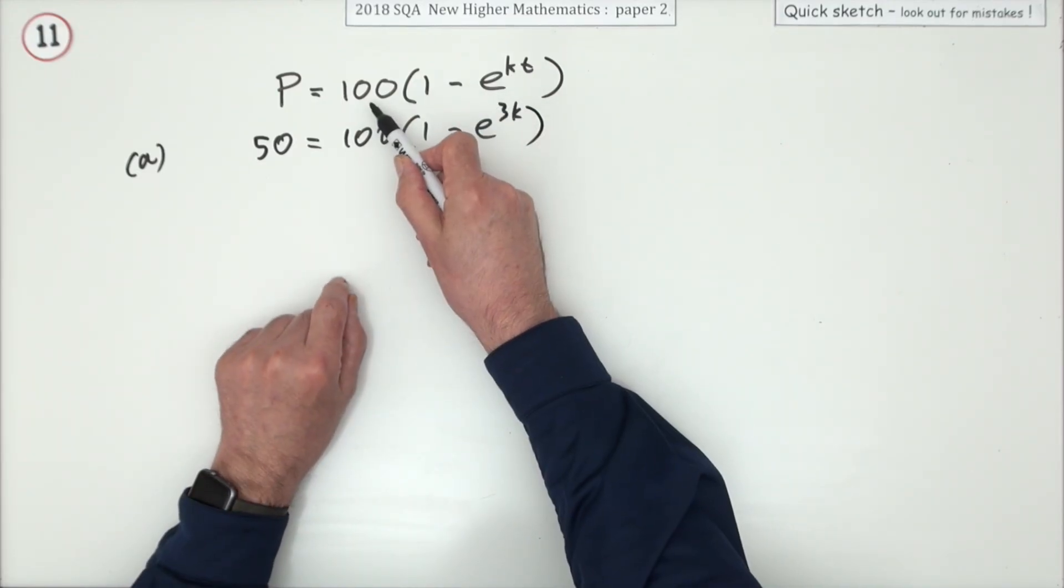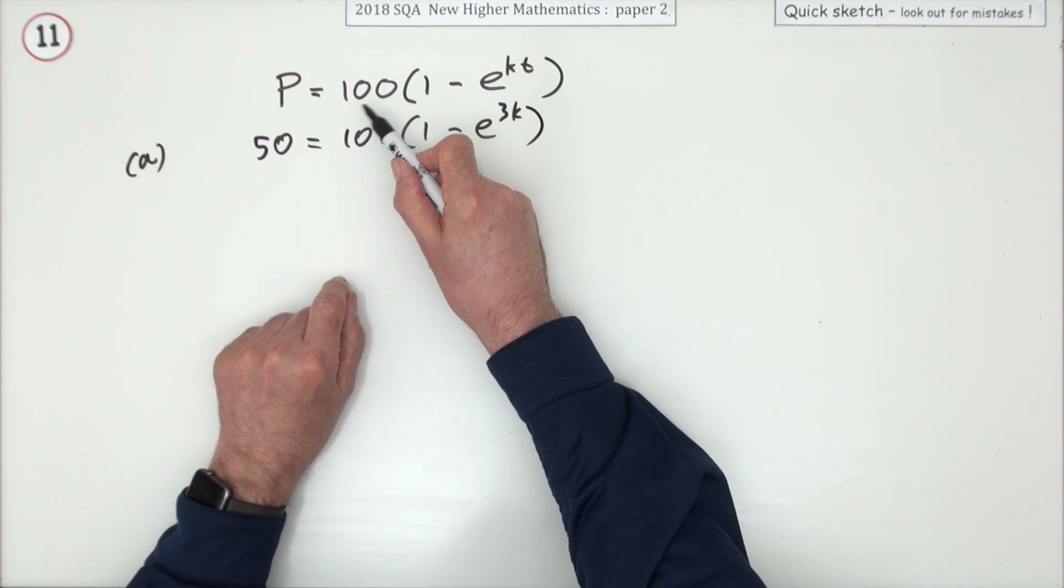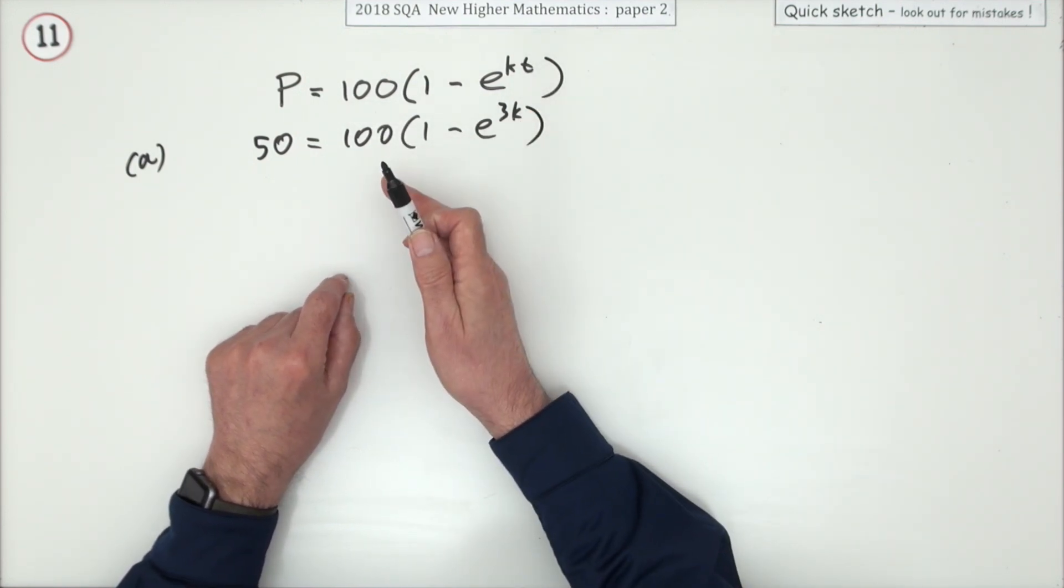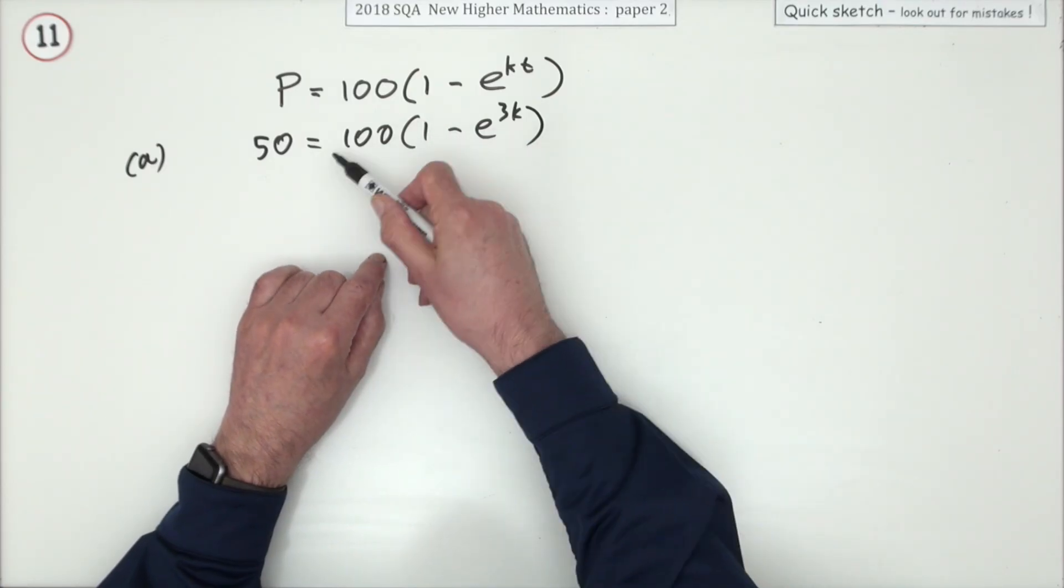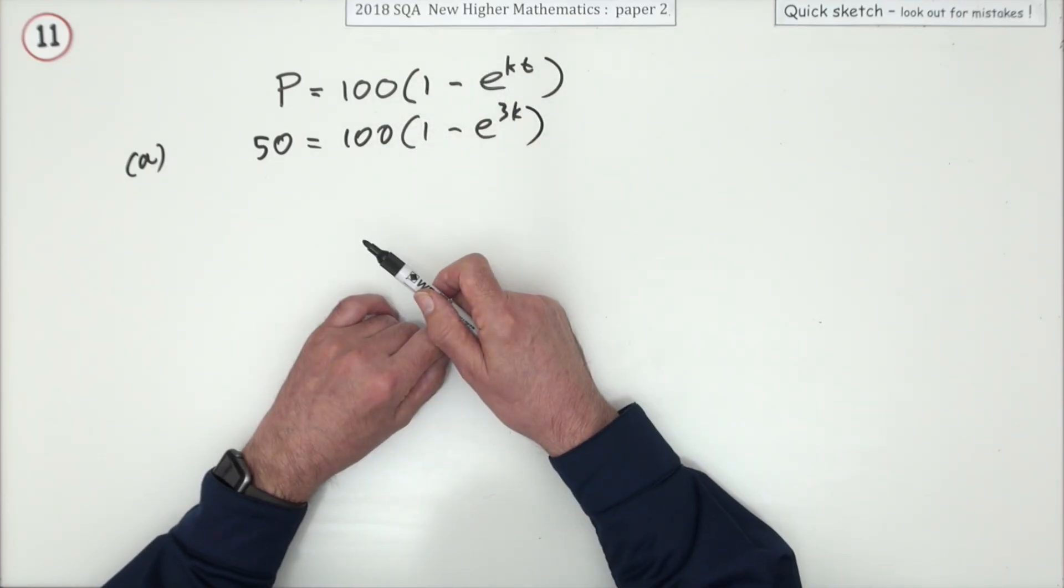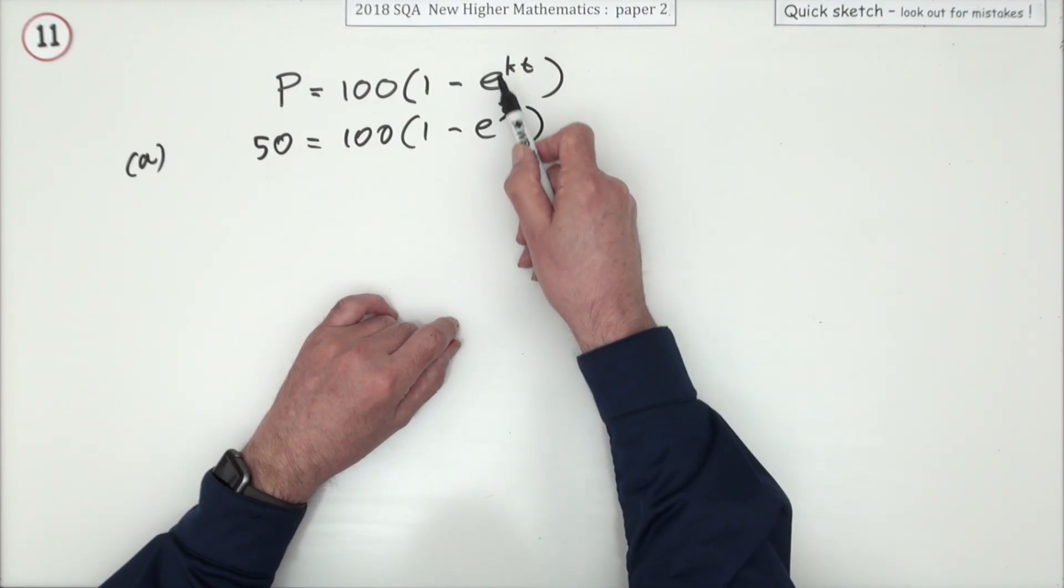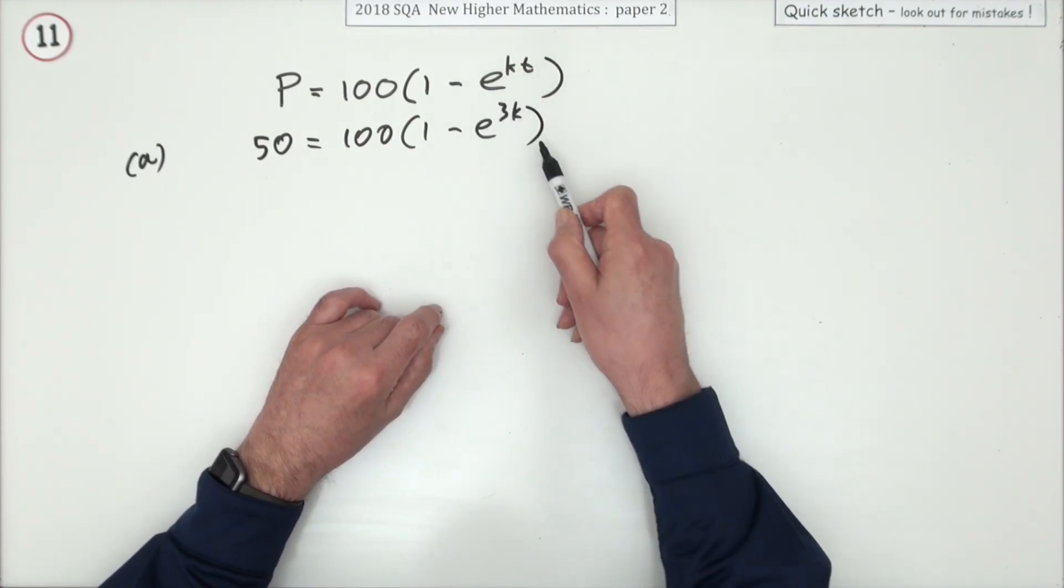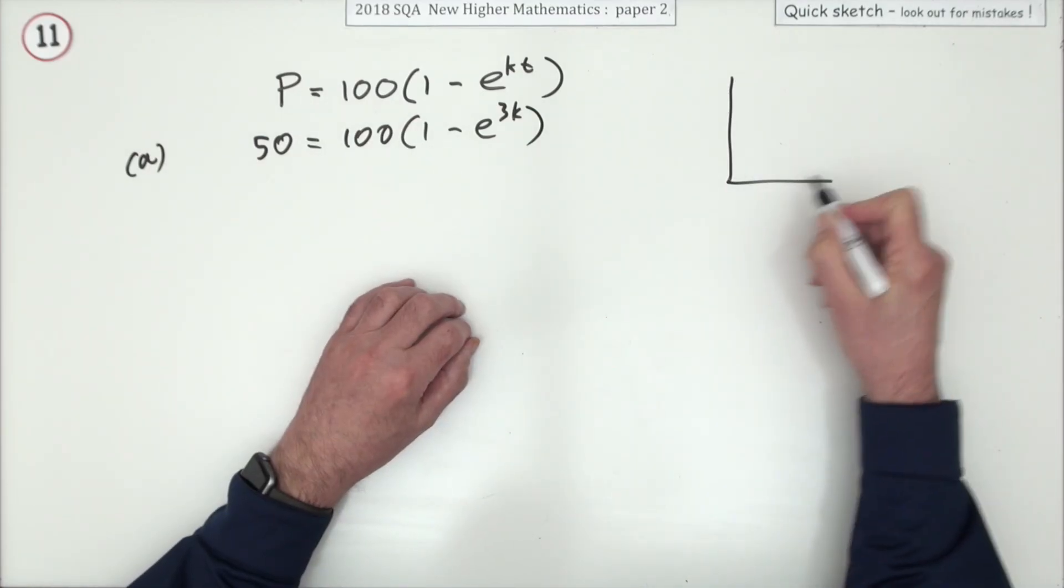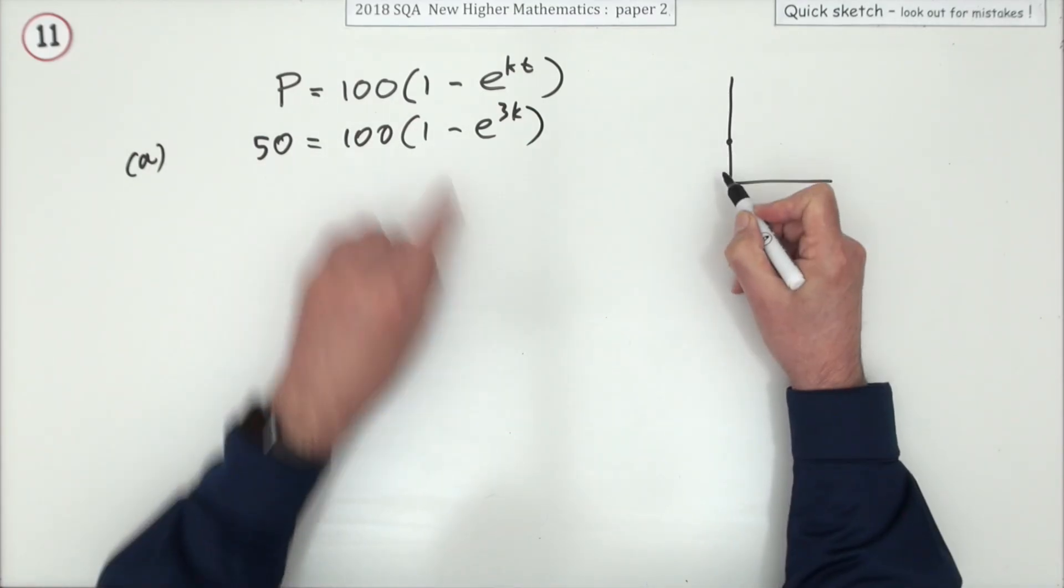Now the way this should work: the percentage should really start at zero because that would be when t was as small as possible - nobody's going to get served within a second - and gradually rise up to 100 after a certain amount of time. So you can see that this exponential part should start at one and fall away to zero.